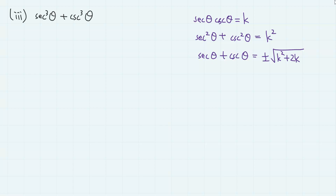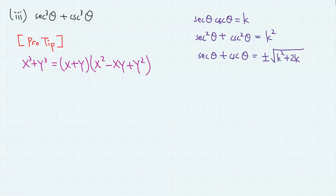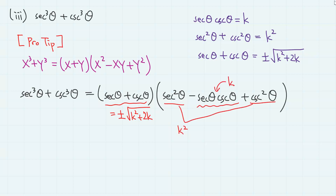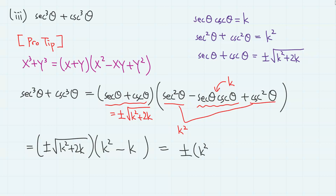Now for the final part: the sum of cubes. We use the famous factorization formula x³ + y³ = (x + y)(x² - xy + y²). So sec³(theta) + csc³(theta) equals (sec(theta) + csc(theta)) times (sec²(theta) - sec(theta)·csc(theta) + csc²(theta)). Using that sec(theta) + csc(theta) = ±√(k² + 2k), and sec²(theta) + csc²(theta) = k², and sec(theta)·csc(theta) = k, we have ±√(k² + 2k) · (k² - k), or equivalently ±(k² - k)√(k² + 2k).